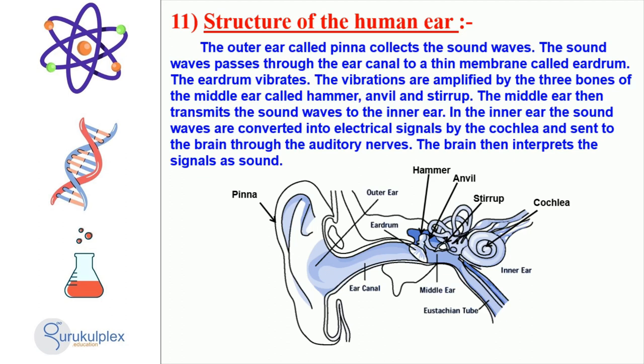The three bones of the middle ear, the hammer, anvil, and stirrup, amplify the vibrations. The middle ear then sends the sound waves to the inner ear.